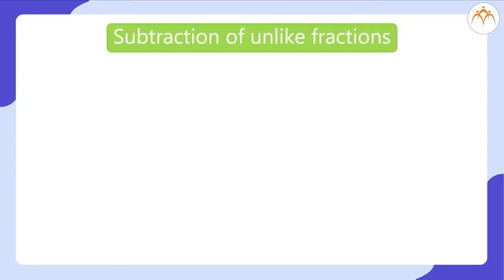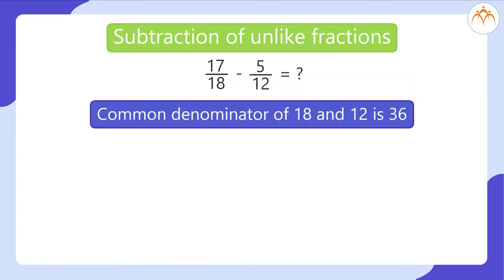Subtraction of unlike fractions. 17 by 18 minus 5 by 12 is equal to what? Common denominator of 18 and 12 is 36.